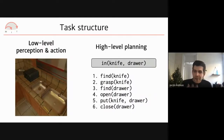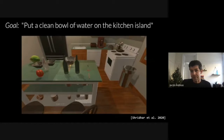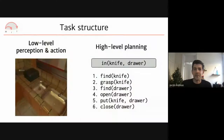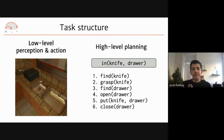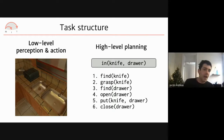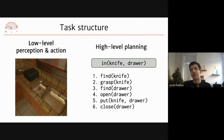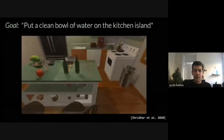The Alfred environment is a household simulation containing tasks like 'put a clean bowl of water on the kitchen island.' Even superficially simple tasks like 'put the knife in the drawer' have many moving parts: recognizing objects, planning paths, and reasoning about long-term consequences. A task like 'cause the knife to be located in the drawer' involves finding the knife, grasping it, finding the drawer, opening it, setting the knife down, and closing it.